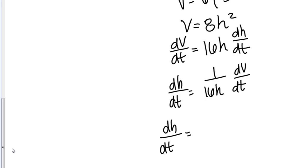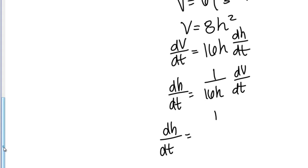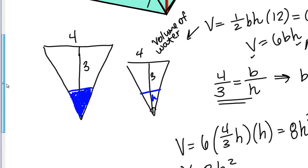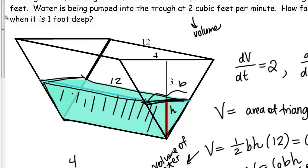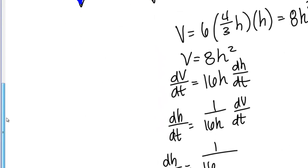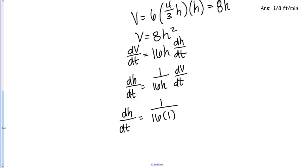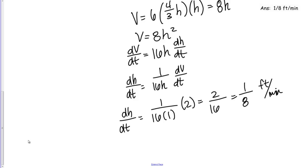Now I know all the values on the right-hand side. I'm looking for dH/dt at the particular instant when H equals 1 foot — when the water level is 1 foot deep. So H = 1, and dV/dt = 2, which is the information given in the problem. Plugging in: dH/dt = (1 over 16 × 1) × 2 = 2/16 = 1/8. So the height is changing at a rate of 1/8 feet per minute, since height is measured in feet and time in minutes.